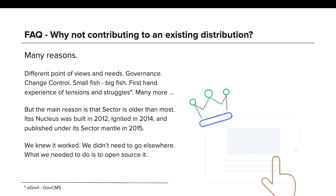Why not contribute to an existing distribution? There are many reasons: different points of view and needs, governance, change control, being a small fish in a big fish pond, and experience of tensions and struggles within the global community. The main reason is that Sector is older than most. The Sector story is four years old, but we started this whole process way earlier, and we were so far down the road when other distributions came up that the only thing we needed to do was open source it, which we did.